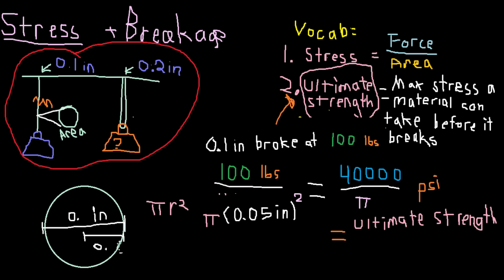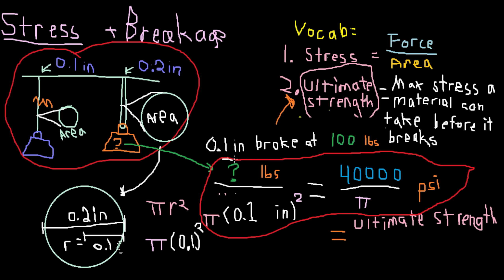We know the second string has a diameter of 0.2 inches, which solving for the cross-section, we get 0.01 pi inches squared. So what we need to do is to equate these two equations, and then we're going to find the force that it takes to break the 0.2 inch diameter string.